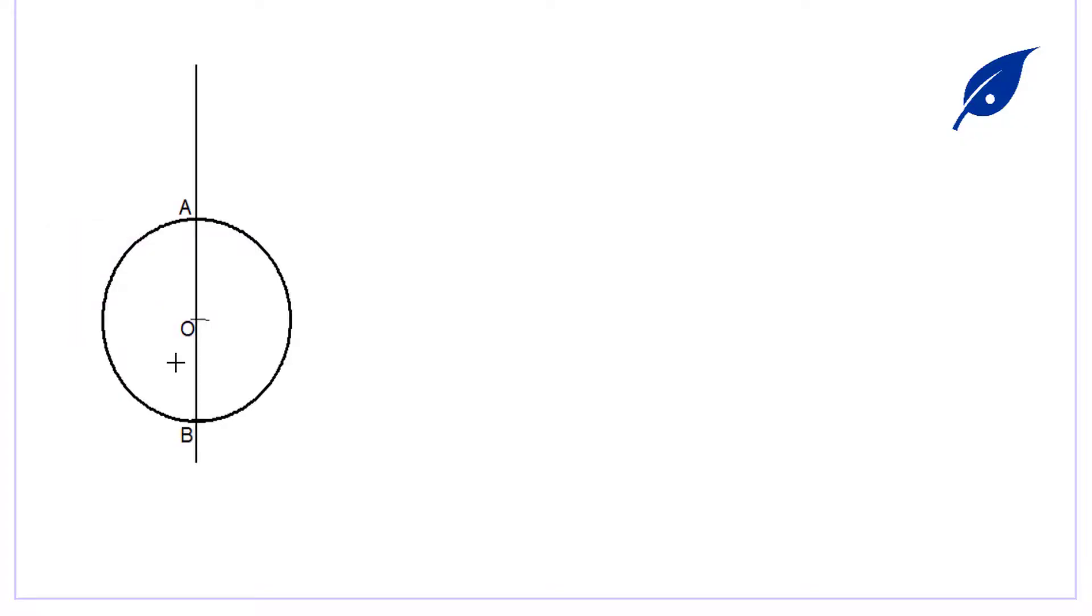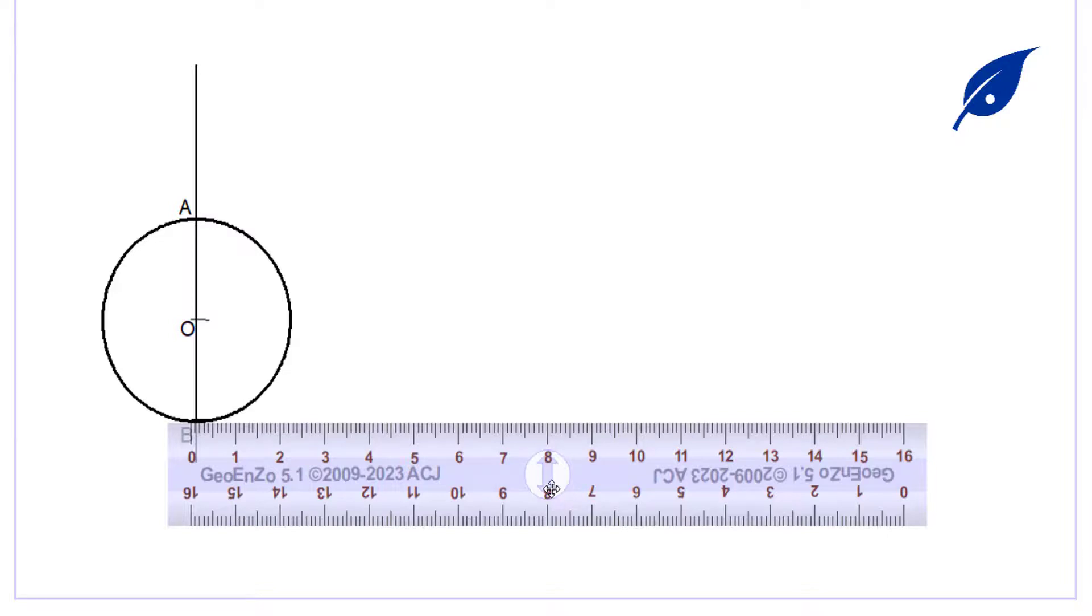At point B we'll draw the horizontal line so that we'll be able to get the circumference of our circle. So now we draw the horizontal line.